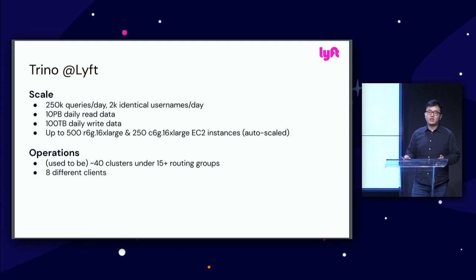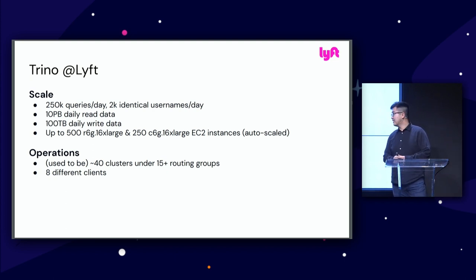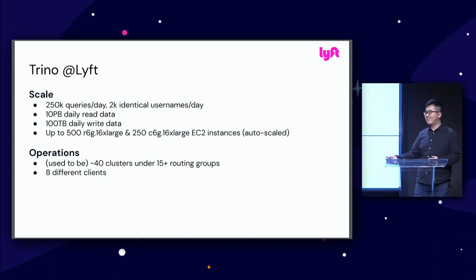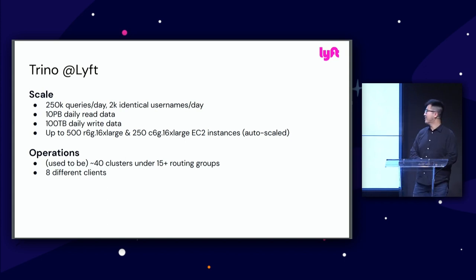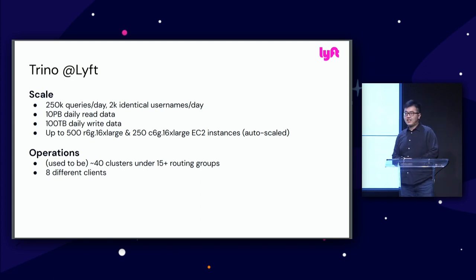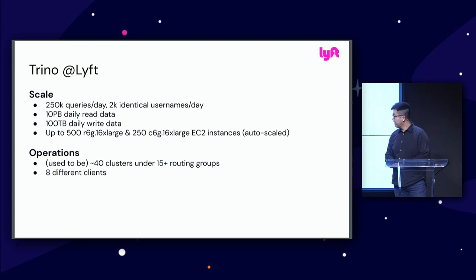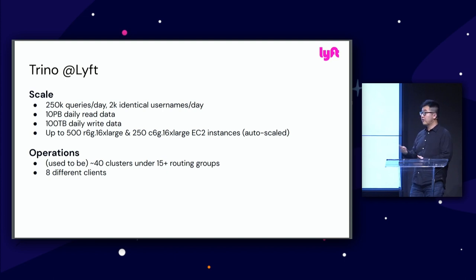For those who've been working with Trino a lot, you know 40 clusters is a really painful number. We don't want that many clusters. Every time I went on-call I was like, okay, I'm going to deal with 40 clusters and guess which one's going to fail tomorrow. Today it's much better — we're consolidating to a much smaller number because we have much more system reliability. We want fewer clusters, not more.